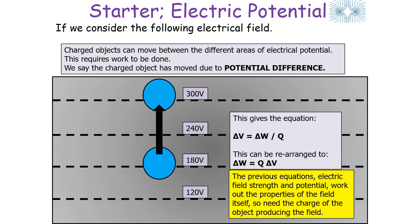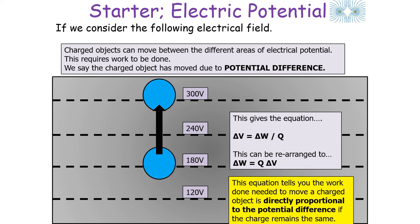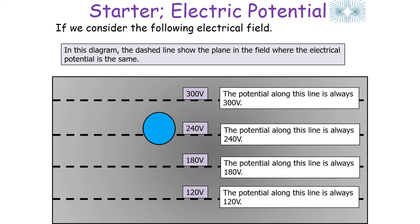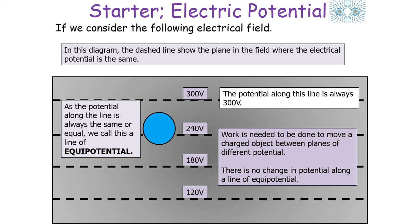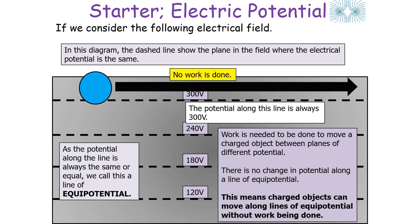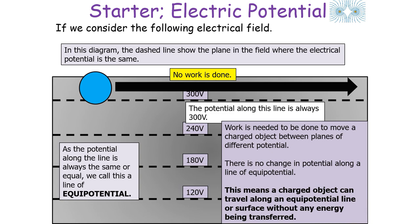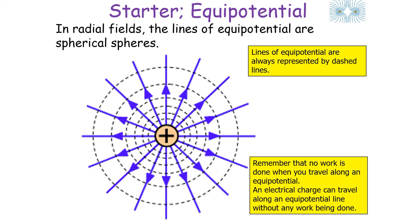From the previous equations, electrical field strength and potential allow you to work out the properties of the field from the charge producing it. The work done is directly proportional to the potential difference if charge remains the same, and directly proportional to charge if PD is constant. Lines of equipotential are dashed lines showing where the electrical potential is the same. No work is done when a charged object travels along an equipotential line or surface. Lines of equipotential are always perpendicular to the electrical field lines.